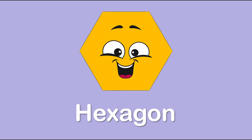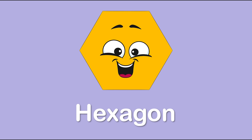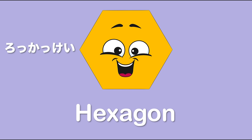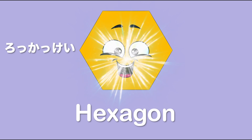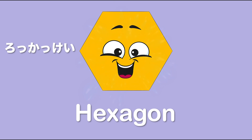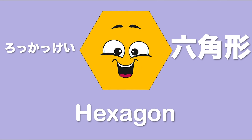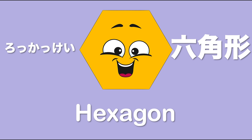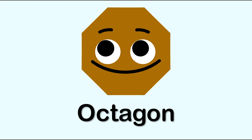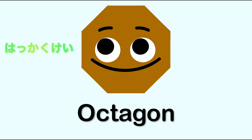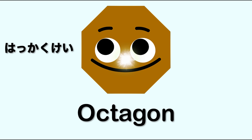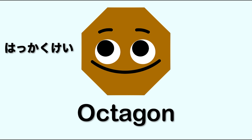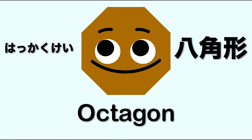Hexagon has six sides — Rok-kaku-kei. Octagon has eight sides — Hak-kaku-kei.